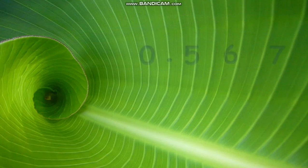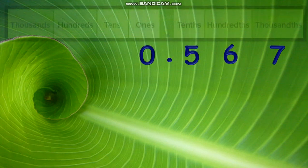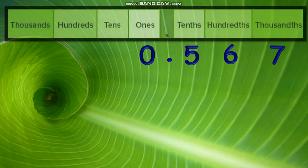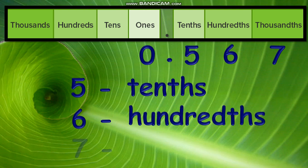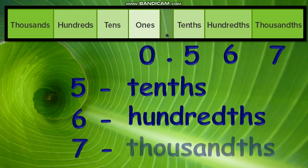Let us have another example: 0.567. The digit 5 is in the place value of tenths, 6 is in hundredths, and 7 is in the thousandths place. It's easy, isn't it?